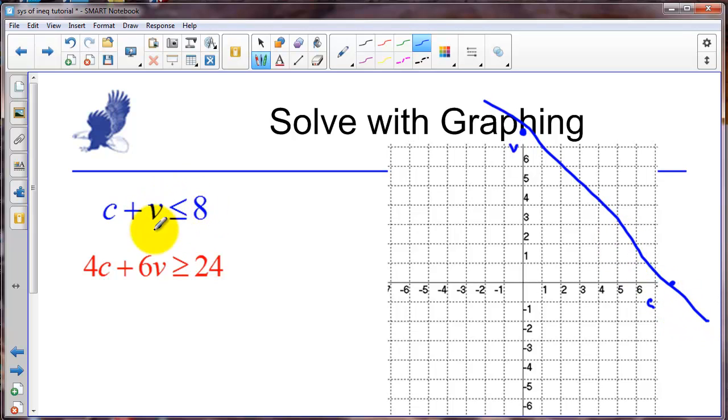And we want values less than that. So if we pick a test point here of 0, 0. 0 plus 0 is less than 8. So we are shading over on this side of our inequality, our boundary line.